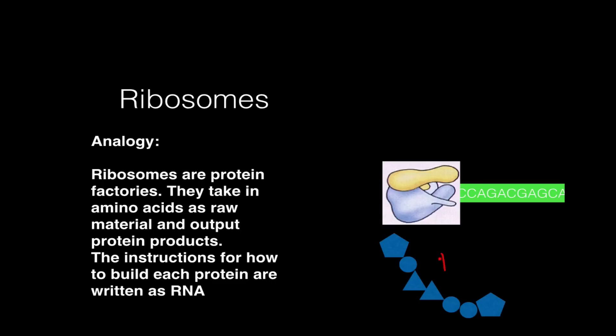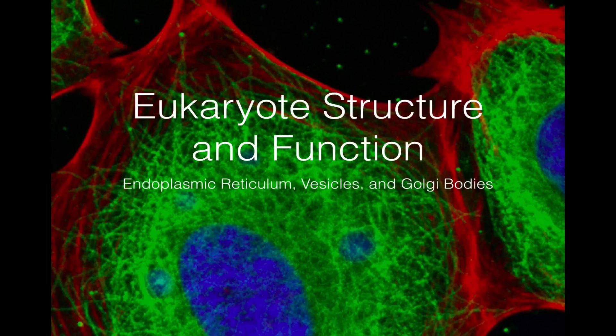They're called polypeptides because the amino acids are joined together by dehydration synthesis by what we call peptide bonds. This structure here, this whole thing is a polypeptide and it is what ribosomes build. We'll stop there, thanks for listening.